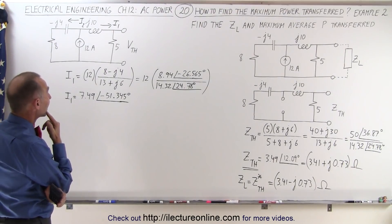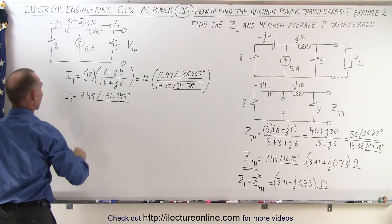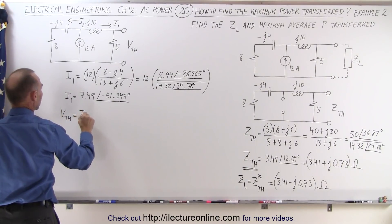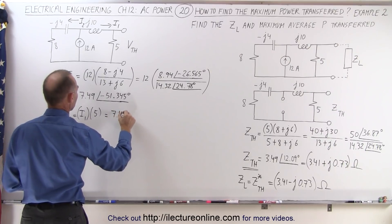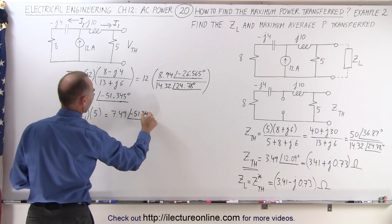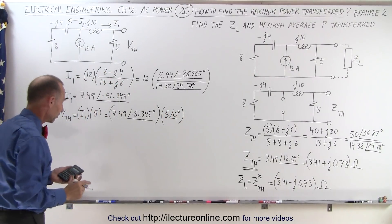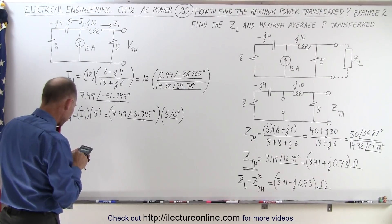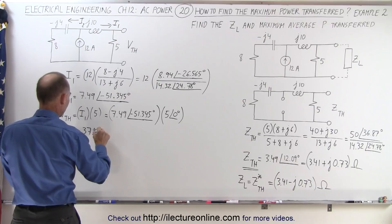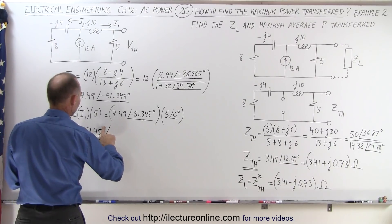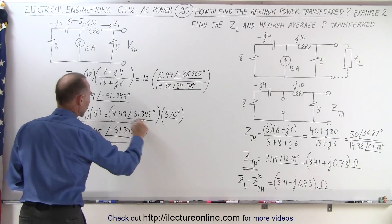Now we need to find the Thevenin voltage. To find the voltage we multiply the current times the resistance, so the Thevenin voltage is equal to i1 times the 5-ohm resistance. This is equal to 7.49 at an angle of −51.345 degrees, multiplied by 5 at a phase angle of 0 degrees. So 7.49 times 5 gives us a Thevenin voltage of 37.45 volts with a phase angle of −51.345 degrees.